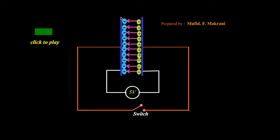Hello friends, in this video we will see the discharging of a capacitor. You can see that the two plates of the capacitor are having exactly opposite charges on them, which shows that the capacitor is fully charged. It is charged to a potential of 5 volts.